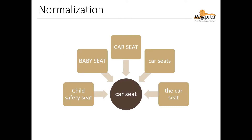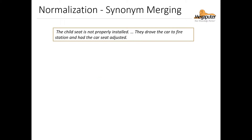Let's go through an example of why normalizing our output is important. Suppose we're trying to capture car seat as a car part. Looking at the parts we extracted, we see that we have some synonyms for car seat, such as baby seat or child safety seat. We also have some different capitalizations, grammatical forms, and also some extra words such as 'the' that we don't need. Here's some example text: 'The child seat is not properly installed. They drove the car to a fire station and had the car seat adjusted.'